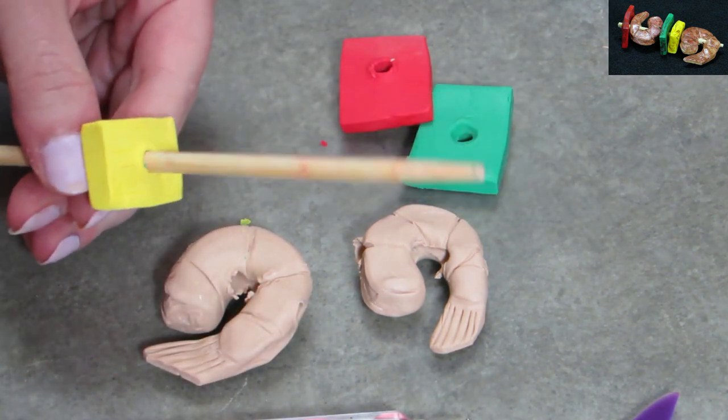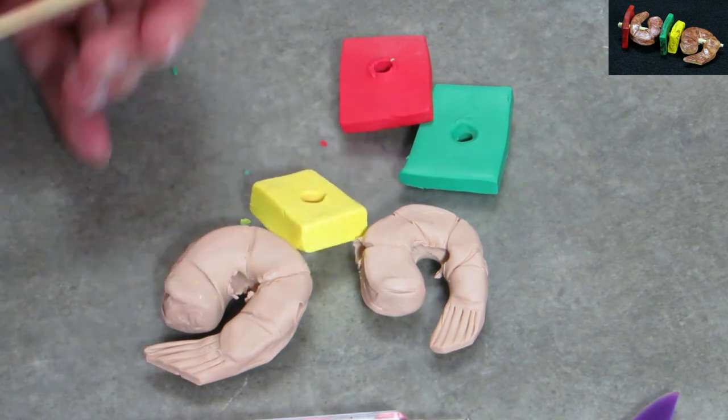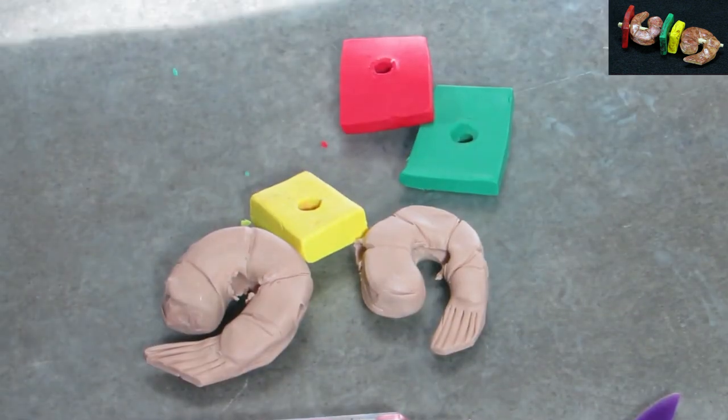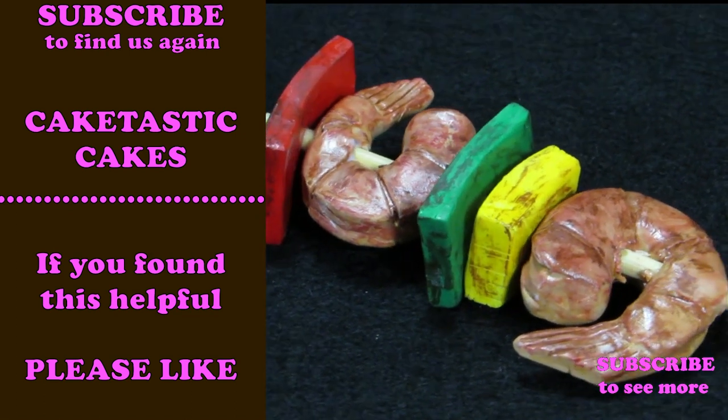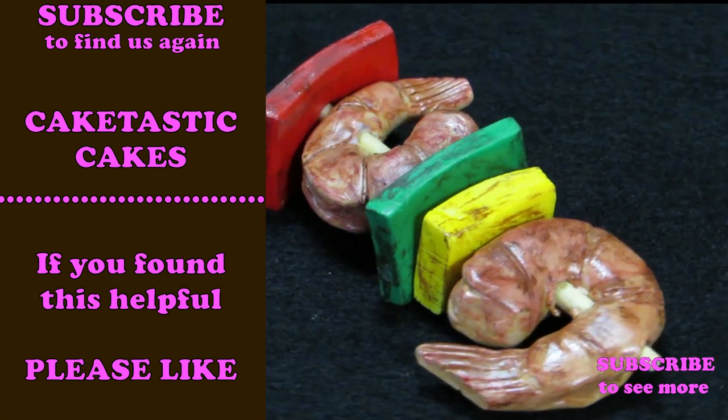So if you are making out of gum paste, you're going to stick it on your stick and just let it dry and harden. If you're baking it, then you bake it. And yeah, I painted it. I painted the shrimp a little brown, dabbed everything with a little black to make it look a little grilled up, and shish kebabs.